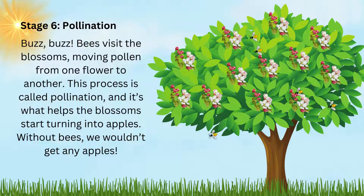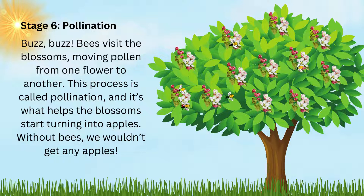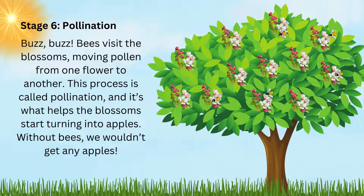Stage 6: Pollination. Buzz buzz! Bees visit the blossoms, moving pollen from one flower to another. This process is called pollination and it's what helps the blossoms start turning into apples. Without bees, we wouldn't get any apples.